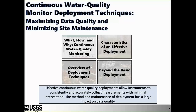There is one key message I hope becomes clear throughout the examples: effective continuous water quality deployments allow instruments to consistently and accurately collect measurements with minimal intervention. The method and maintenance of deployment has a large impact on data quality.